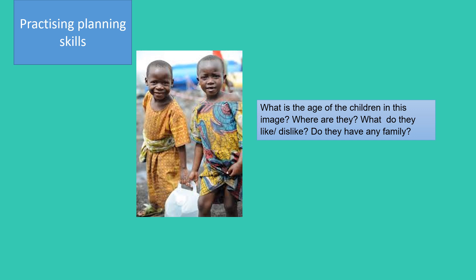I want you to start to practise planning and mapping out some ideas. Using this image and your creativity: what do you think the age of the children is in the image? Where might they be? What do you think they like or dislike? Do they have any families? Can you spend about five minutes coming up with a back story — some possible mapped out ideas for the children in the images?